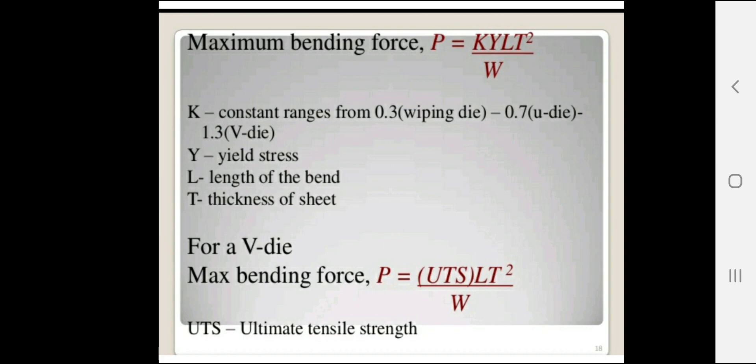The maximum bending force is calculated using the formula: F = k·Y·L·t²/W, where k is a constant ranging from 0.3 (wiping die) to 0.7, Y is yield stress, L is the length of the bend, and t is the thickness of the sheet. For a V-die, the maximum bending force P = UTS·L·t²/W, where UTS is the ultimate tensile strength.